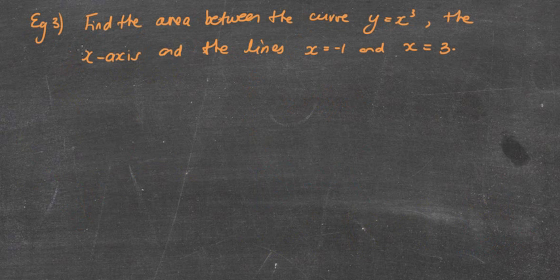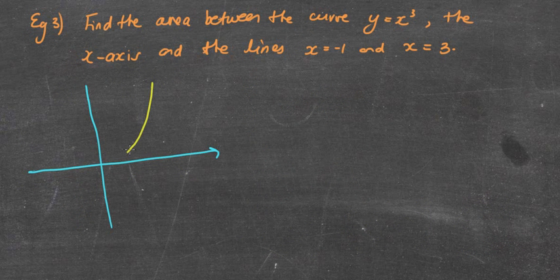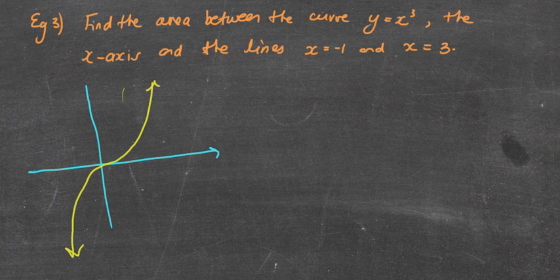So the next question, find the area between the curve y = x³, the x-axis, and the lines x = -1 and x = 3. So again, I'm going to do a nice little sketch here. So line x = -1, or -1 will be here. And then 3 will be something like over here. So that's 1, 2, 3. So they're my upper and lower bounds.